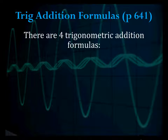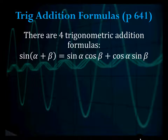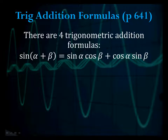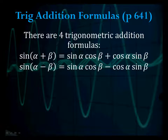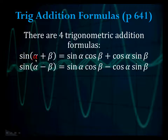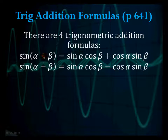There are four formulas, listed on page 641 of your book. First, sine of a plus b equals sine a cosine b plus cosine a sine b. Next, sine of a minus b equals sine a cosine b minus cosine a sine b. Notice the pattern: sine a cosine b, cosine a sine b — and the sign matches the sign of the formula.